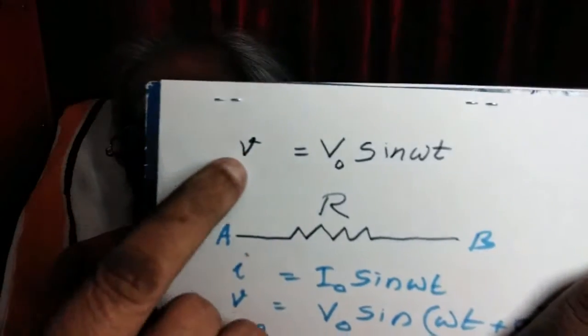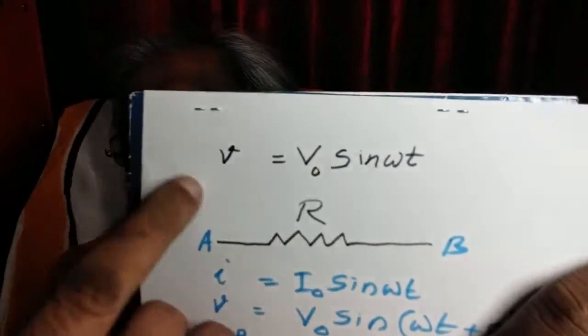In simple harmonic motion we have used sine and cosine functions to represent displacement etc. So a simple form of AC is called sinusoidal AC. That means such an AC voltage is represented purely by a sine function. For example, V equals V₀ sine omega t.